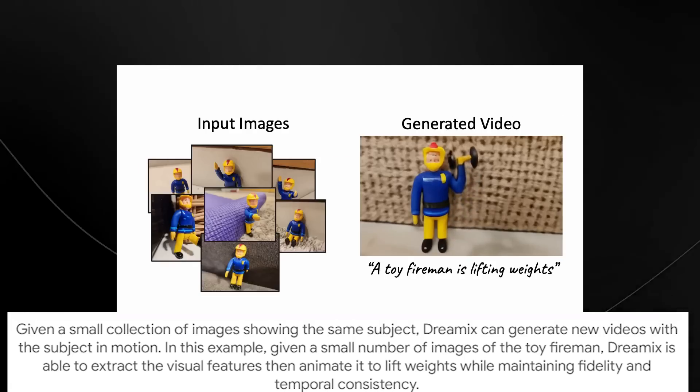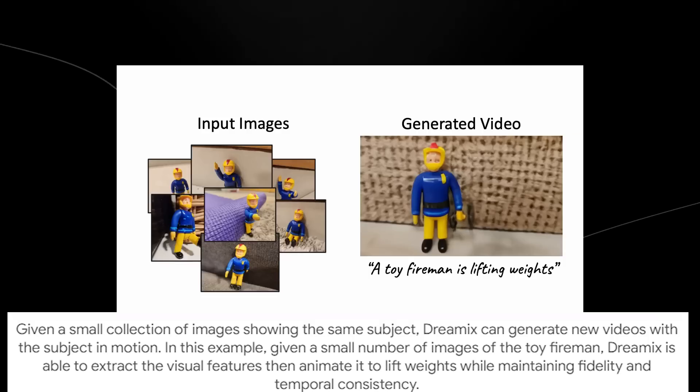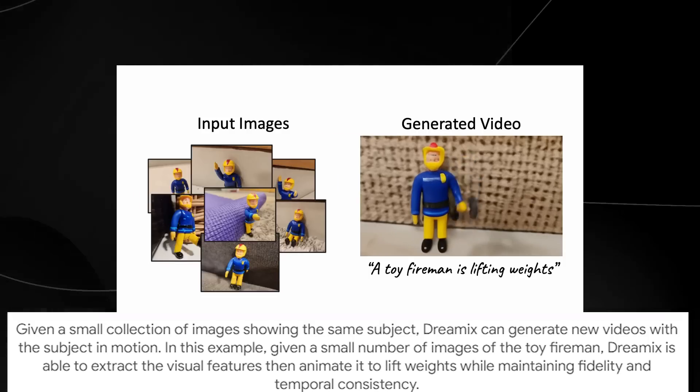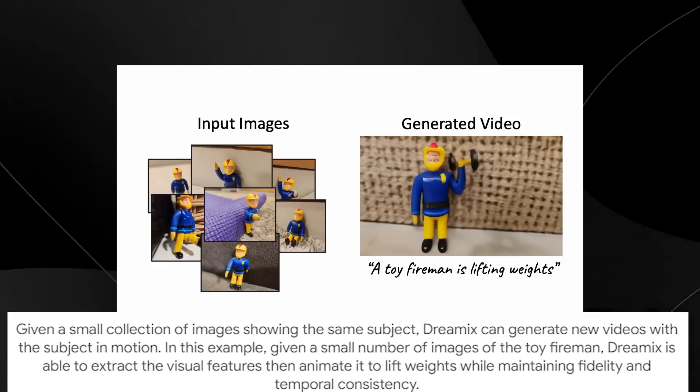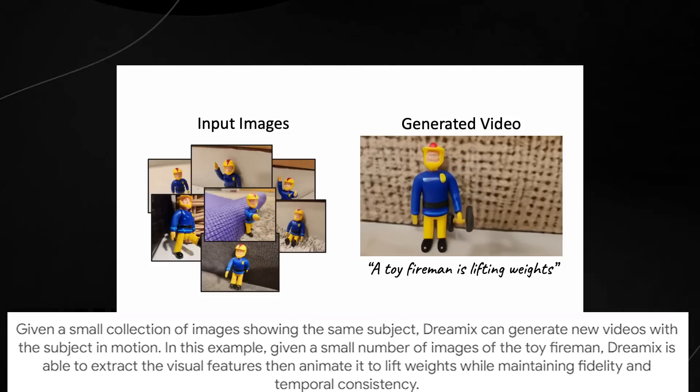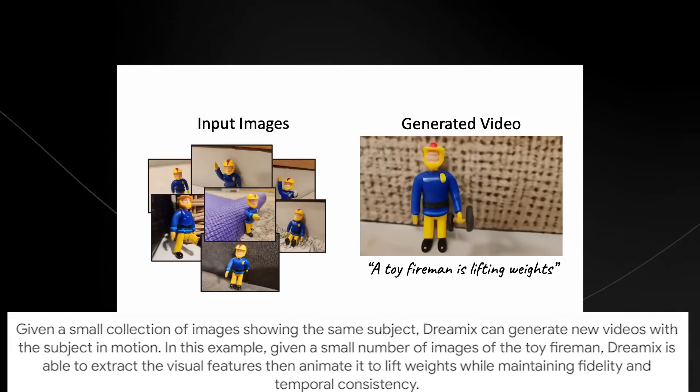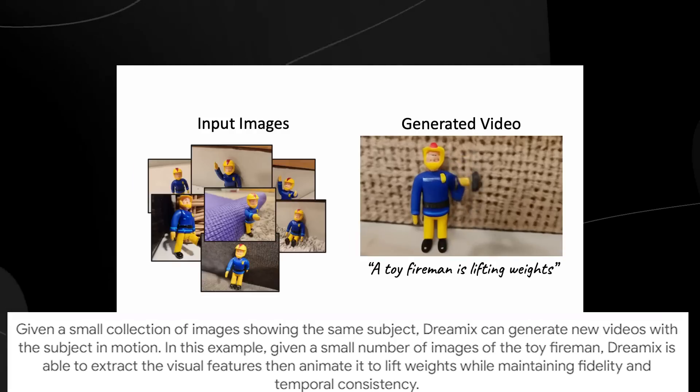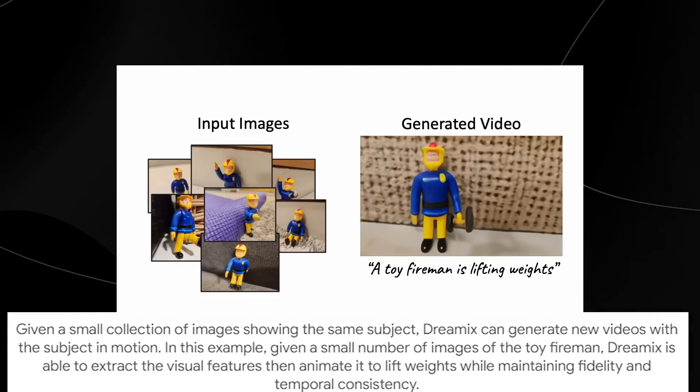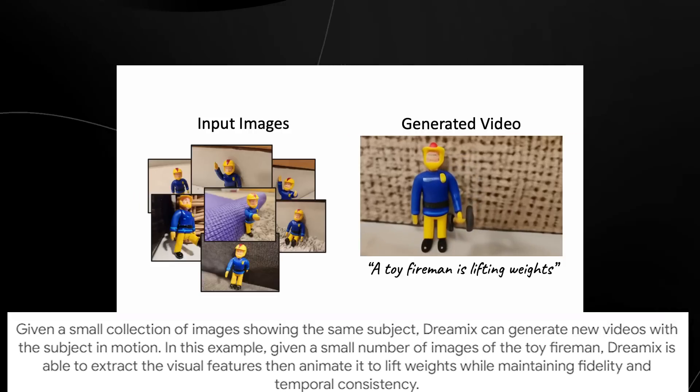This one is pretty cool. It says, given a small collection of images showing the same subject, which is the same Lego toy character, Dreamix can generate new videos with the subject in motion. In this example, given a small number of images of the toy fireman, Dreamix is able to extract the visual features, then animate it to lift weights while maintaining fidelity and temporal consistency, which just means that it looks normal and not strange at all.